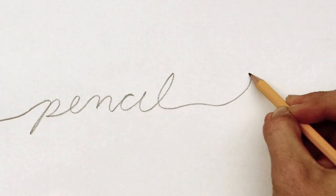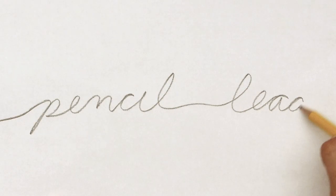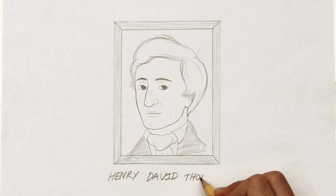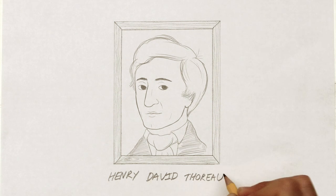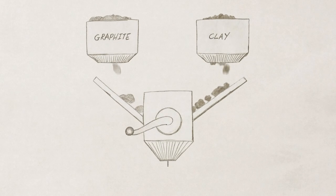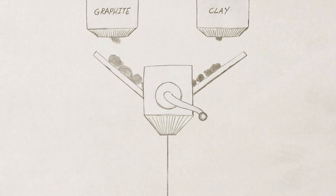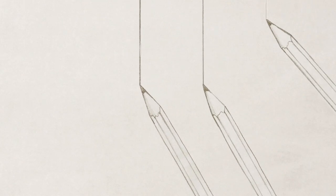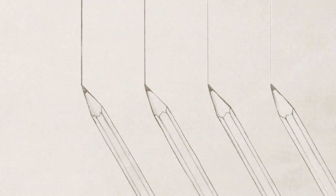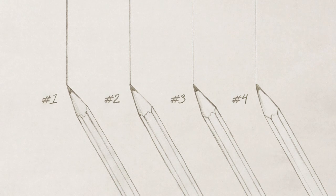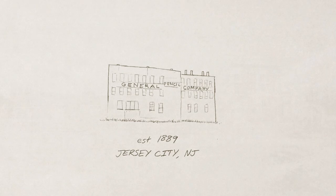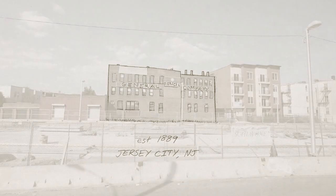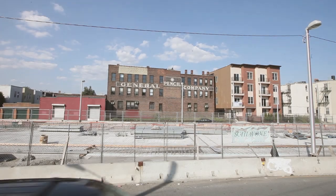Graphite looked and acted a lot like lead, so that's what people called it. In the 1800s, a thoughtful young man named Henry David Thoreau found that mixing graphite with clay made it harder. Pencils with clay-heavy graphite made lighter marks, and Thoreau's proud father introduced a numbering system. Soon, pencils were being mass-produced in factories like the General Pencil Company.